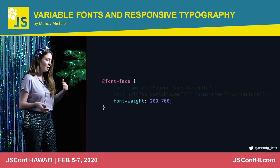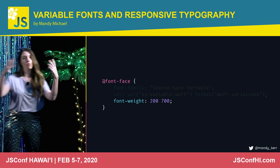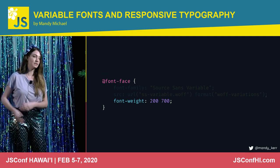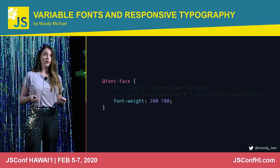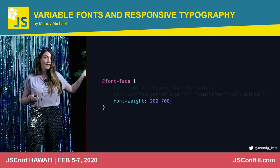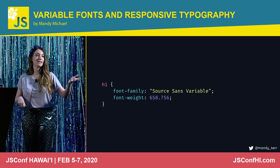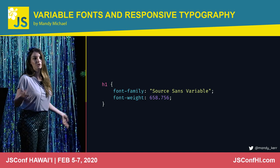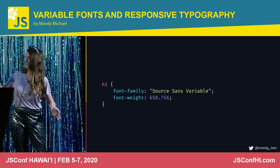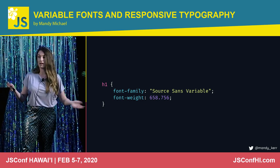With a standard font, say you had a regular weight and a bold weight — you would do one font-face block for regular and one for bold, and keep doing this until you had all the styles you need. With a variable font, you just have to define a range, so in this case 200 to 700. When you reference it in your CSS, you can pick any number from 200 to 700, including decimal places — 658.756 is a random number, but you can pick anything.